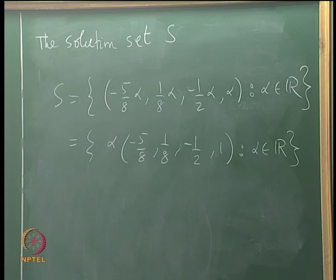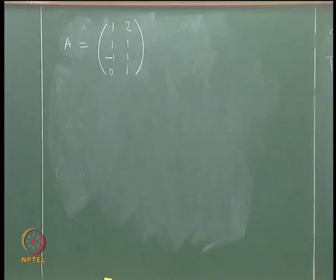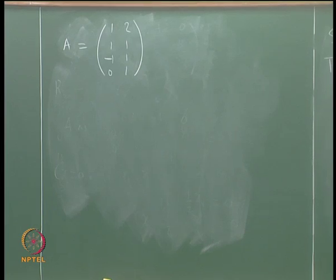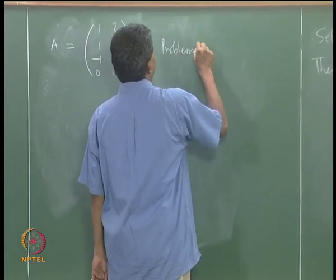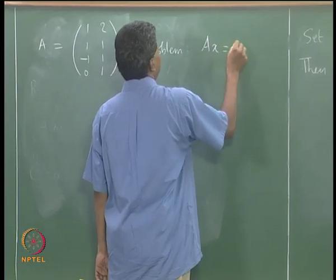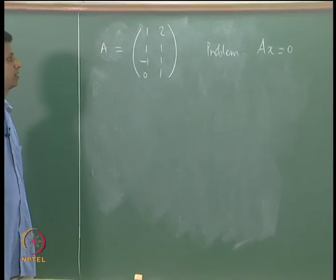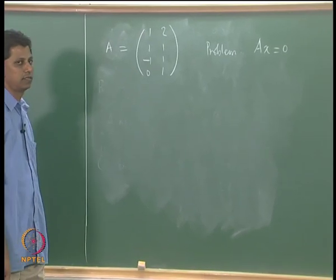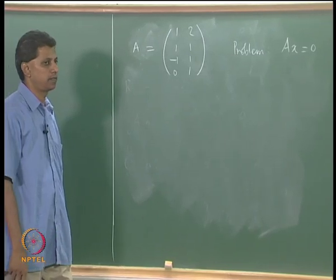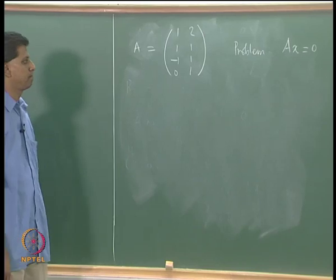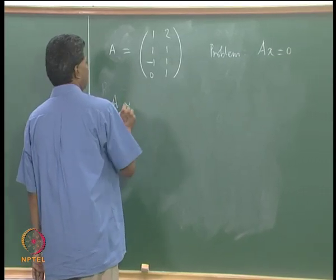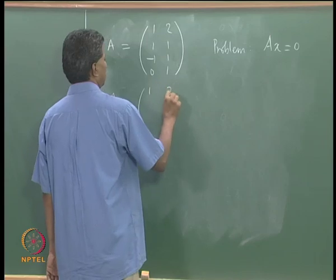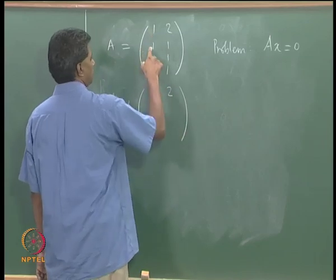Note that the number of equations is strictly less than the number of unknowns here, which is a precursor to the theorem that a homogeneous system with fewer equations than unknowns always has a non-trivial solution. Now let us look at a second example: 4 equations in 2 unknowns.